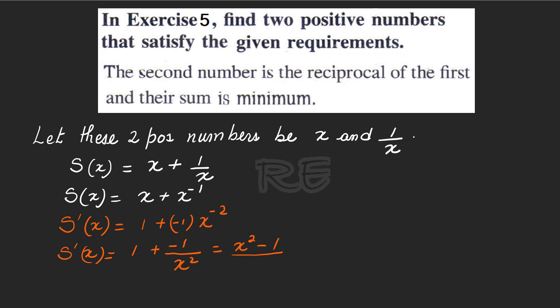The common denominator is X squared. So 1 is X squared over X squared. Therefore, we get X squared minus 1 over X squared.